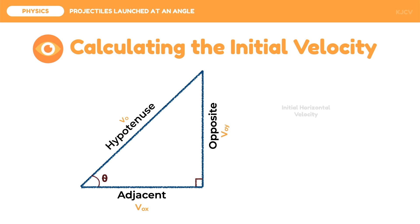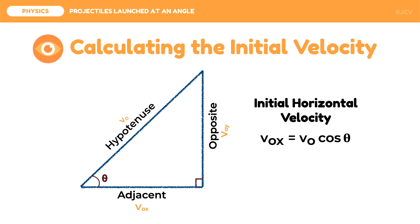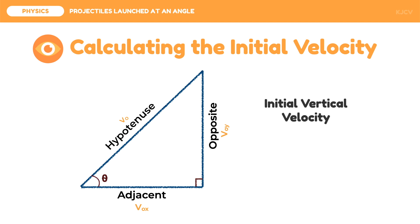First, suppose we need the initial horizontal velocity but we do not have the value for the initial vertical velocity. Since only the adjacent side and the hypotenuse side are present, we will use cosine. Isolating the initial horizontal velocity, it will be equal to V0 times cosine theta. Second, we can determine the initial vertical velocity using the opposite side and the hypotenuse, so we will use sine theta. Isolating the initial vertical velocity, we get: initial vertical velocity equals V0 times sine theta. These initial velocities can now be used in calculating the motion of projectiles launched at an angle.